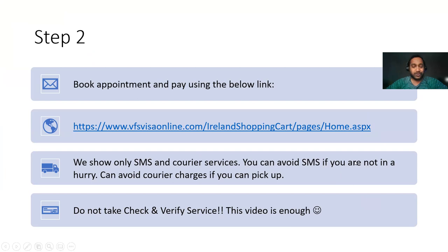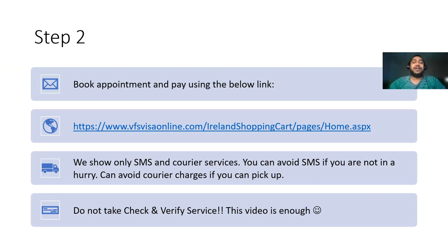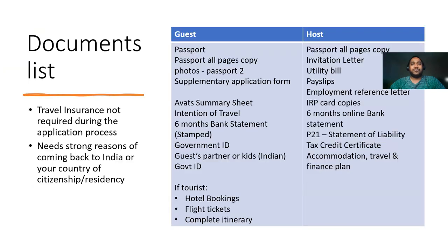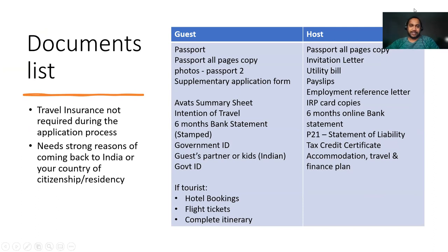You can avoid the SMS service if you're not in a hurry. We also took courier services, but you don't need to if you are in the city of the VFS Global application center. Do not take the check and verify service. If you watch this video, it's enough — the check and verify service costs close to 2,800 rupees, which is about 40 euros, and I wouldn't suggest anyone spend that. So step one: fill the application. Step two: book the appointment. Step three, which is the main step, is preparing the documentation. Here are the documents you need for both visit family and friend, as well as tourist.